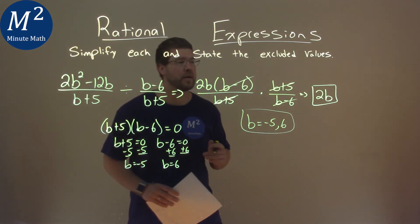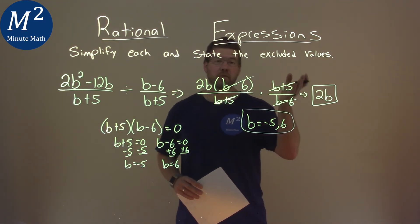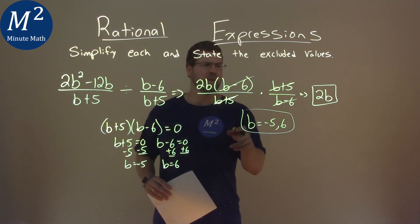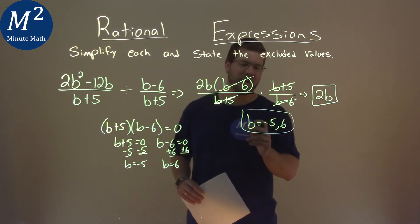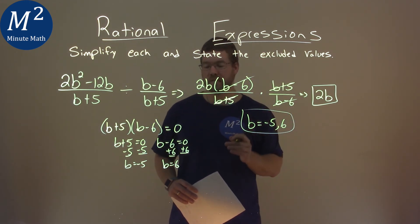And so my final answer here is a simplified expression of 2b, pun intended, or not really intended, but there, and our excluded value of negative 5 and a positive 6.